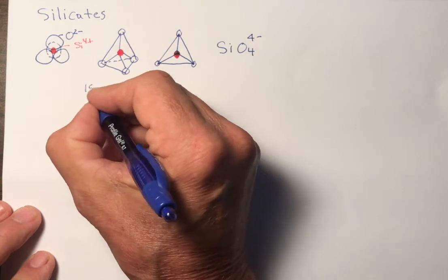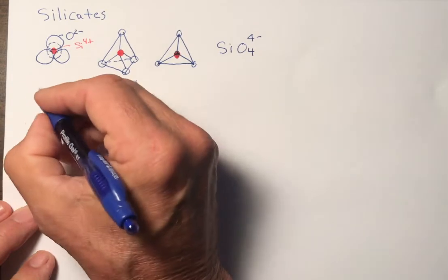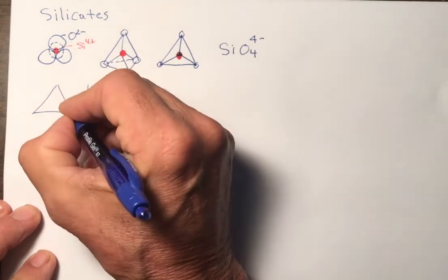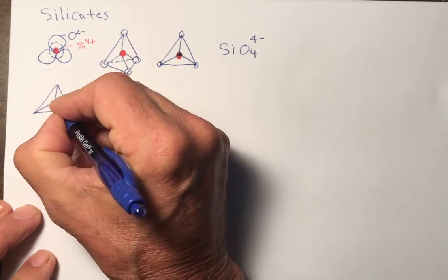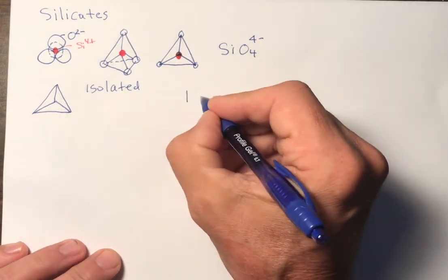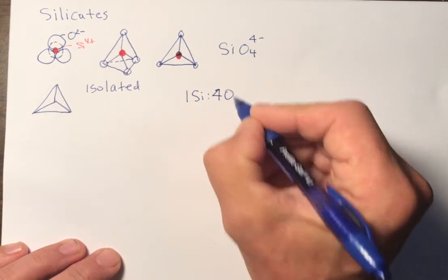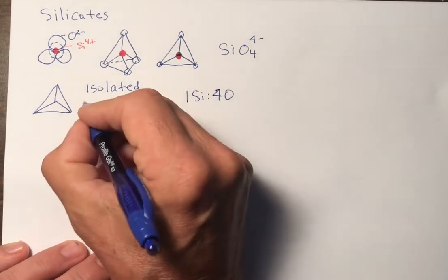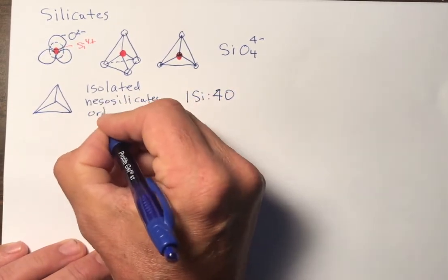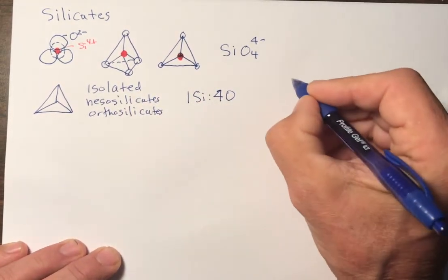And the simplest ones are isolated so that the tetrahedra do not share any oxygens with any other tetrahedron. This is the isolated silicate tetrahedron, no shared oxygens. And those always have the basic stoichiometry, one silicon, four oxygens. And these are called nesosilicates or orthosilicates.